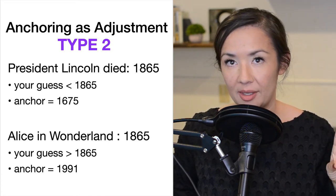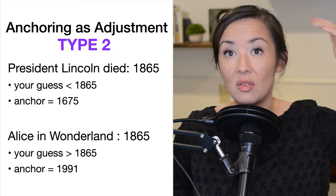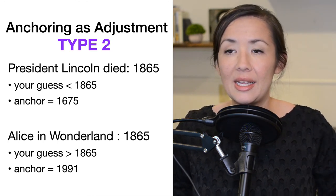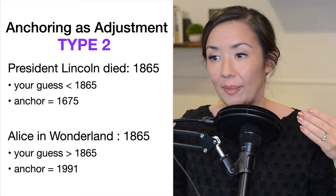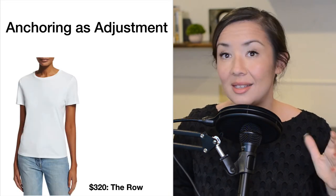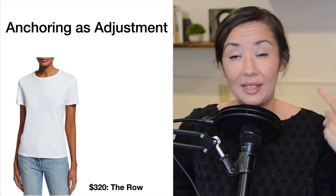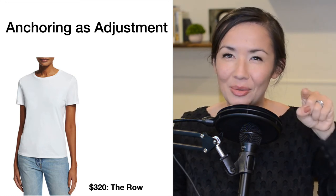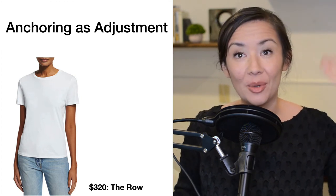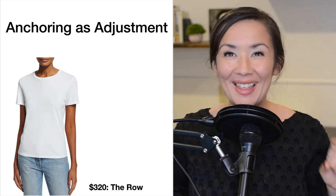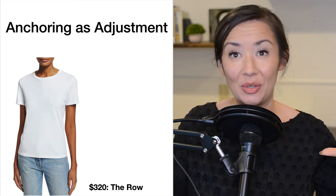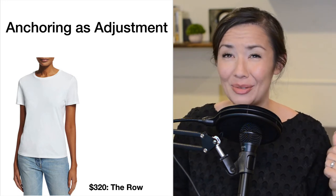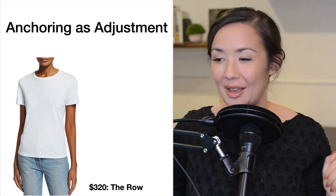This is a Type 2 process because you're actively trying to adjust your estimate from the anchor. Note that anchors don't have to have any meaning or provide valuable information. This same process applies to the t-shirt example — I didn't give you a number, but a number was automatically triggered in your mind, and you anchored yourself. In class, students break into groups to anchor each other, and in one example they had people guess hundreds of dollars off from the actual price.